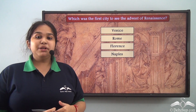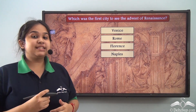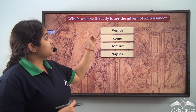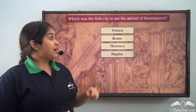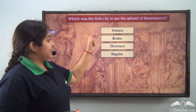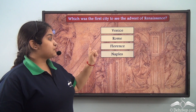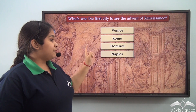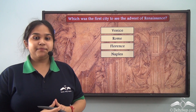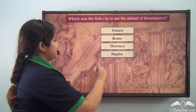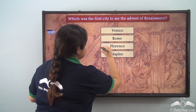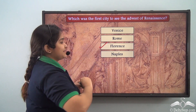Which was the first city to see the advent of Renaissance? Was it Venice, Rome, Florence, or Naples? That is correct — it was Florence.